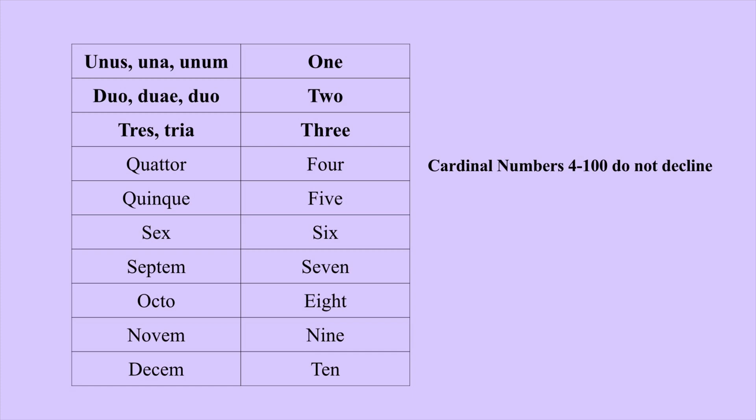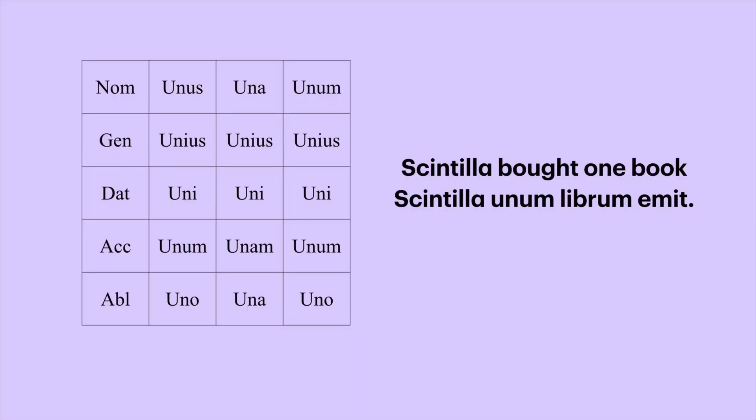Cardinal numbers four through one hundred do not decline — no matter how you're using them in a sentence, they remain the same. Four is always quattuor, nine is always novem, six is always sex, ten is always decem. However, one, two, and three do decline, and they each have their own special pattern.